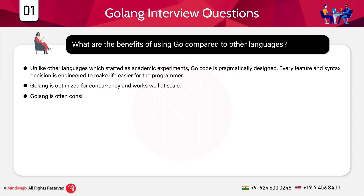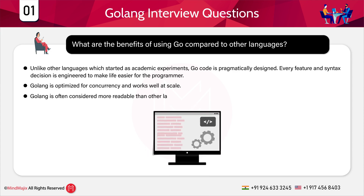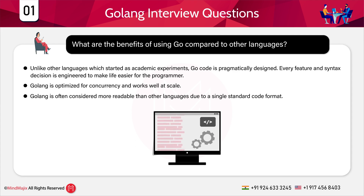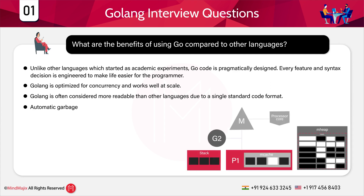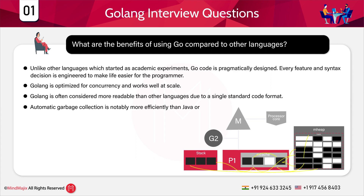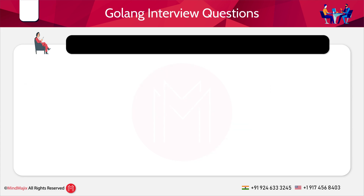Golang is often considered more readable than other languages due to its single standard code format. In Golang, we don't have multiple standards — it follows a single standard code, which is why it is considered more readable. Additionally, automatic garbage collection is notably more efficient than Java or Python because it executes concurrently alongside the program.